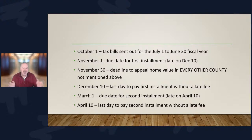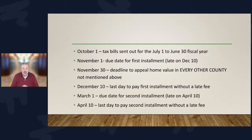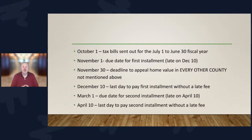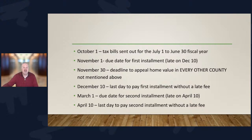November 1st is the due date. Before you say it's due December 10th — no, it's due November 1st. It's late December 10th. It's like your mortgage payment is due on the 1st but you don't have a past-due penalty until after the 16th — you have a 15-day grace period on your mortgage. You have a 40-day grace period to pay your property taxes. So it is due November 1st and it is late on December 10th.